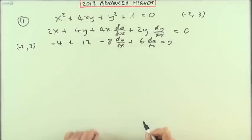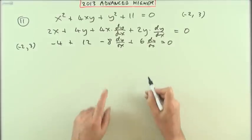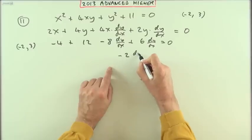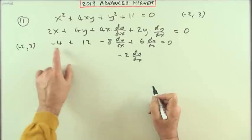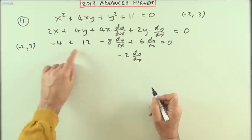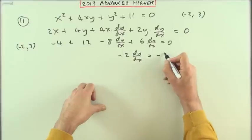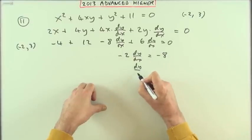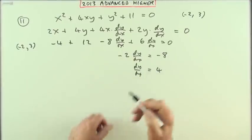2y gives plus 6 dy/dx, all equalling 0. Adding everything up, I've got negative 2 dy/dx. The constant terms come to 8, taking that over gives negative 8. So dy/dx equals 4.